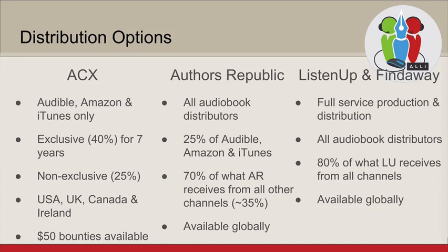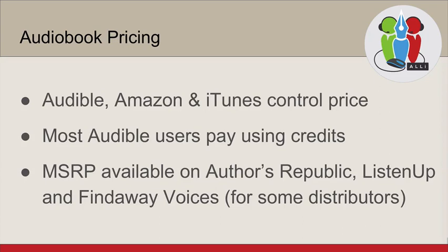Authors Republic gives you 25% of what you get on Audible, Amazon, or iTunes — similar to the non-exclusive relationship at ACX — and 70% of what they receive from all other channels, which generally works out to about 35% of the sale price. Authors Republic is available globally. The full-service distribution companies like Listen Up and Findaway Voices also work with all audiobook distributors and give you 80% of what they receive from all channels, and they're available globally too.